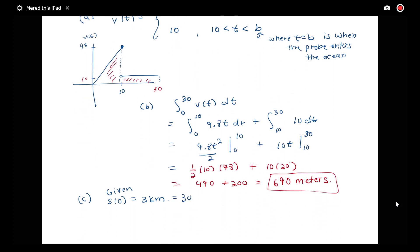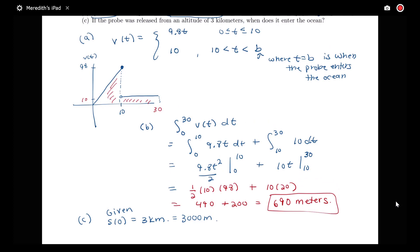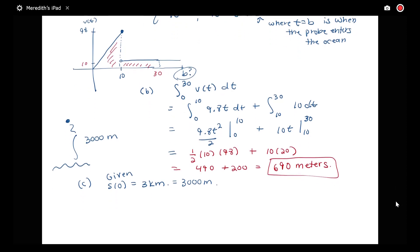Since our velocity is in terms of meters per second that we've been working with, we've got this initial height here of 3,000 meters. So that means if my probe here is released from an altitude of 3,000 meters, it has to travel 3,000 meters in order to enter the ocean. So we know it was still traveling at 30 seconds, so we're trying to find this unknown time B here when it will actually enter the ocean.